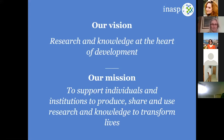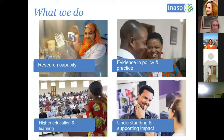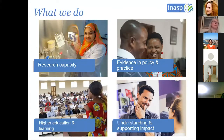What do we actually do? We have four main strands to our work. The first is research capacity — this is about strengthening research communication, supporting local publishing and helping the connections between research communication and how it's used in policy and wider engagement.